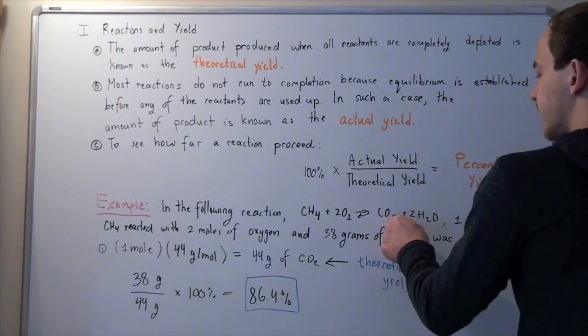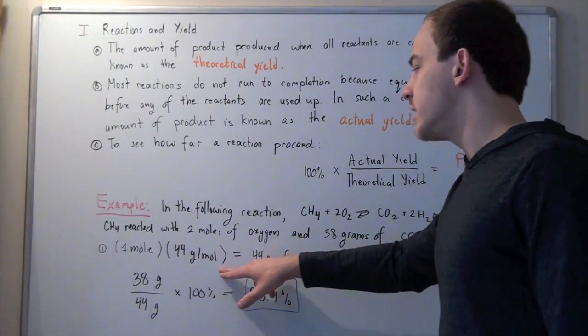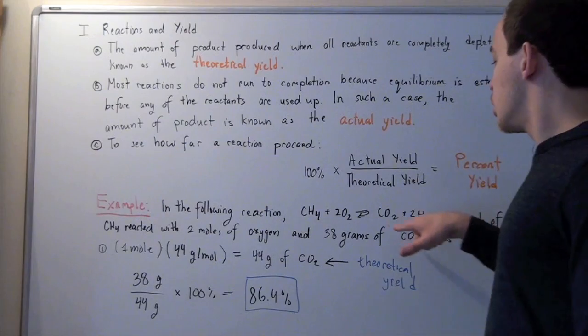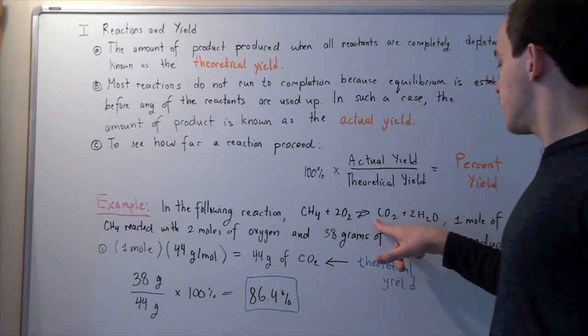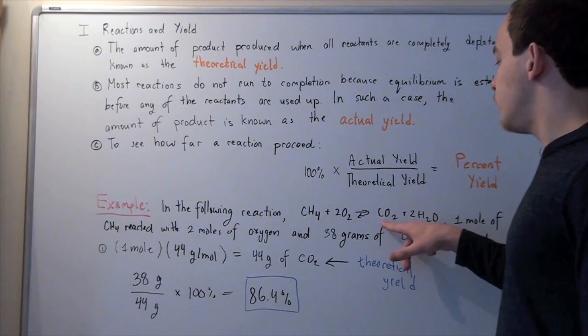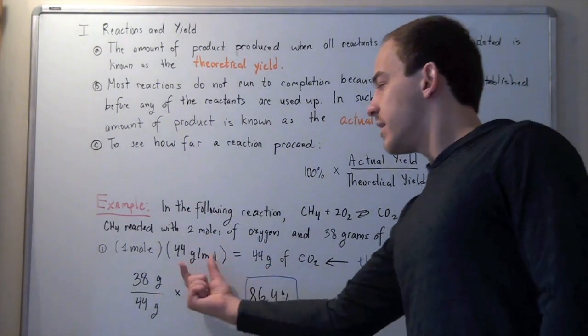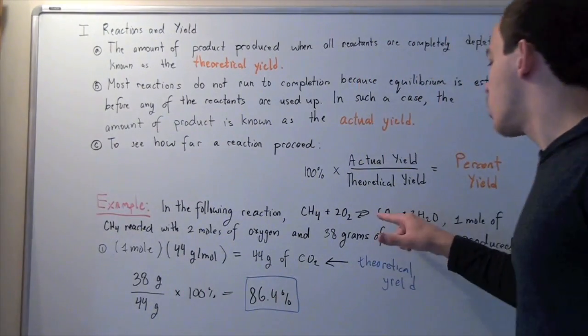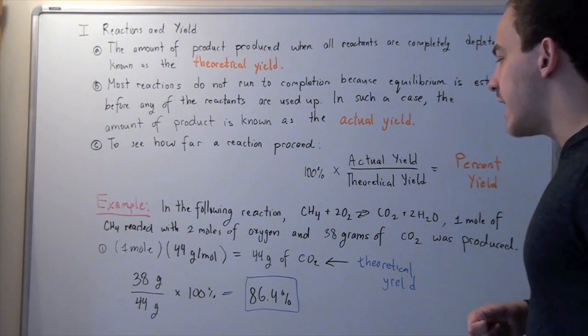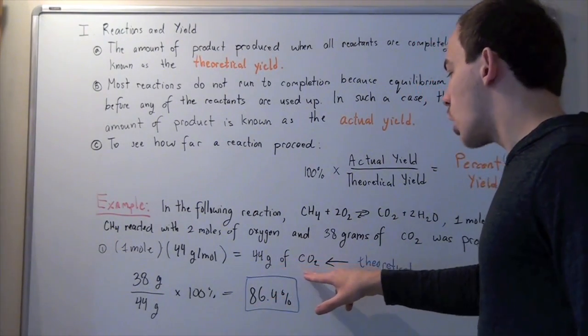And one mole of carbon dioxide is simply, we take our molecular weight of carbon dioxide, which is 12 grams per mole for carbon and 32 grams per mole for two oxygens, and we get 32 plus 12 gives us 44 grams per mole. This is our molecular weight of carbon dioxide. So, you multiply by one mole and we get the theoretical yield is 44 grams of carbon dioxide.